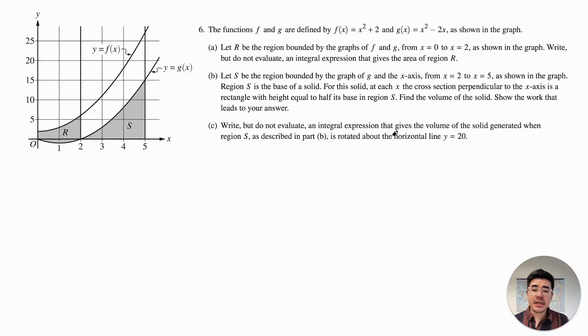Part C says write, but do not evaluate an integral expression that gives the volume of the solid generated when region S is rotated around the horizontal line y equals 20. So here's our axis of revolution. We're going to rotate this way. And when we have an axis of revolution, we need to find our radius. So the outer radius is going to be the distance from here to here. And then our inner radius is going to be the distance from here to here. So I'm going to label this one big R and I'm going to label this one little r. So big R is just going to be consistently 20 minus 0. The distance between these two things is constantly 20. Now the little radius is going to depend. At various points, it's going to be the top, which is 20, minus the curve g of x.